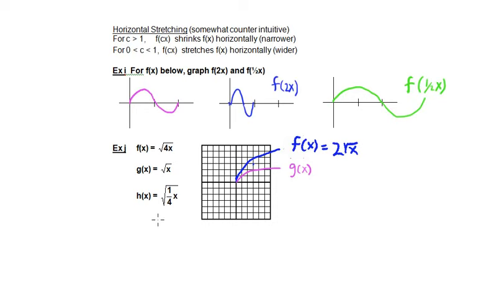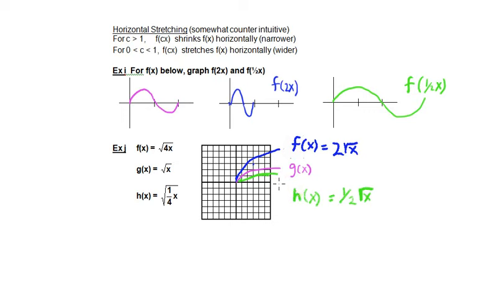Next, h of x equals the square root of one fourth x. We can simplify: the square root of one fourth is one half, so h of x equals one half times the square root of x. Like the other graph, its height is half of the original. Thinking about this in terms of horizontal stretching: h of x is shorter, but it's also more stretched out horizontally — it has become wider. This is what we expect for a fraction which is less than 1.